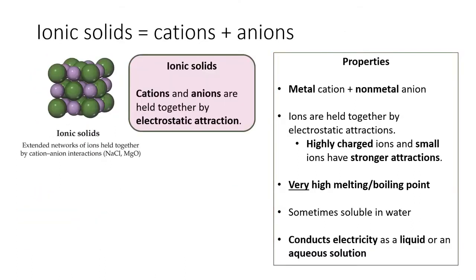We introduced ionic solids in chapter two. These compounds consist of alternating cations and anions held together by electrostatic attractions between positive and negative charges. Because ionic bonds are some of the strongest bonds, these compounds have incredibly high melting and boiling points, the highest of all compounds.